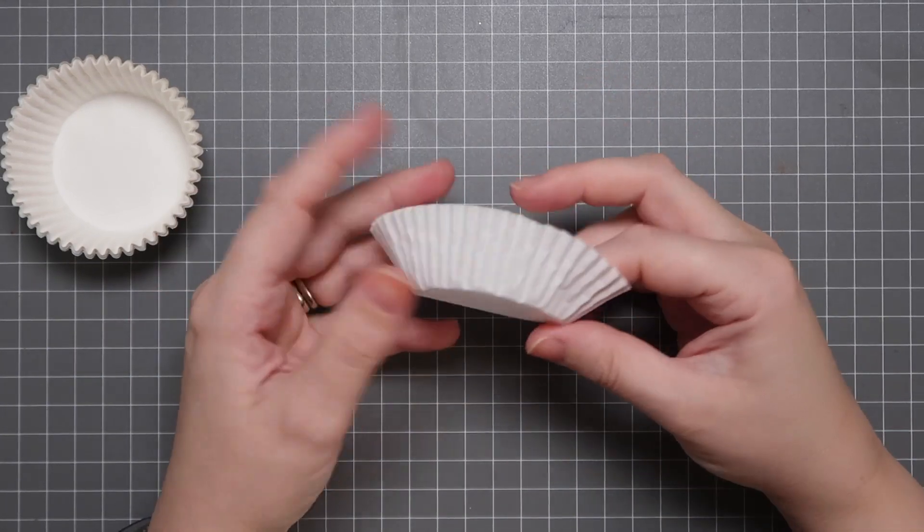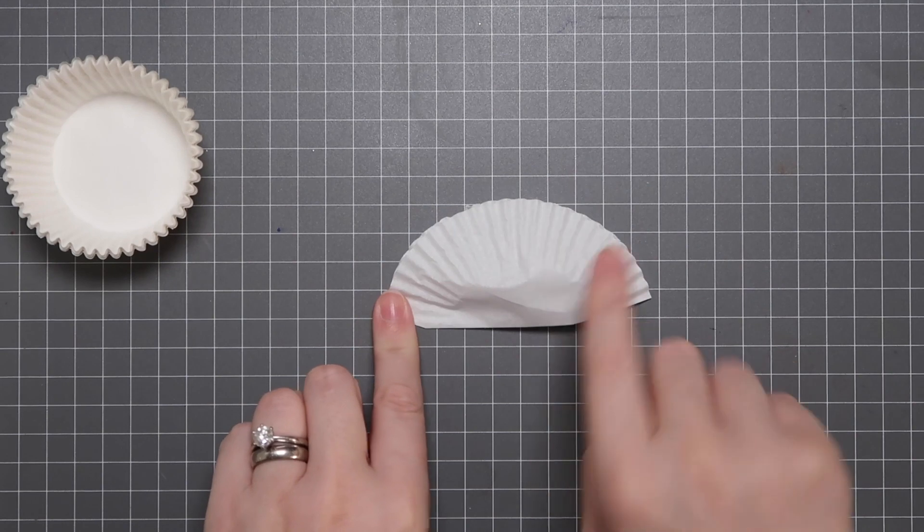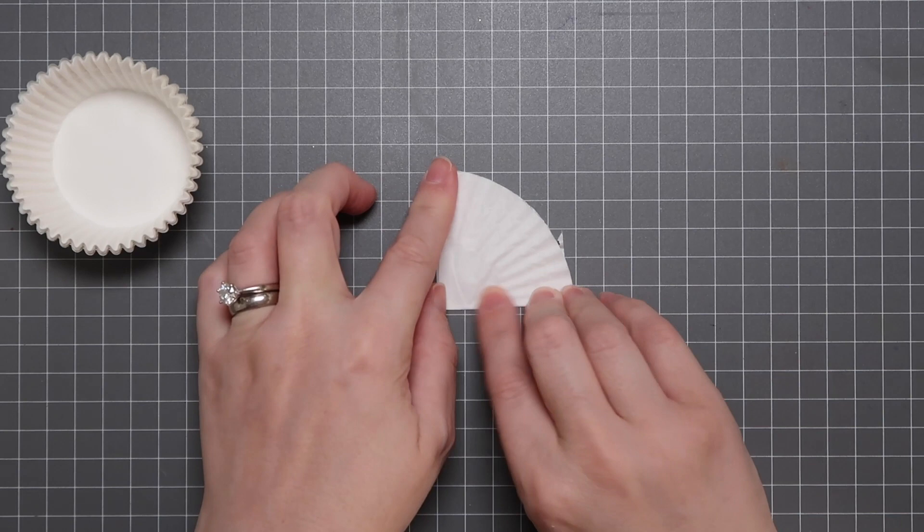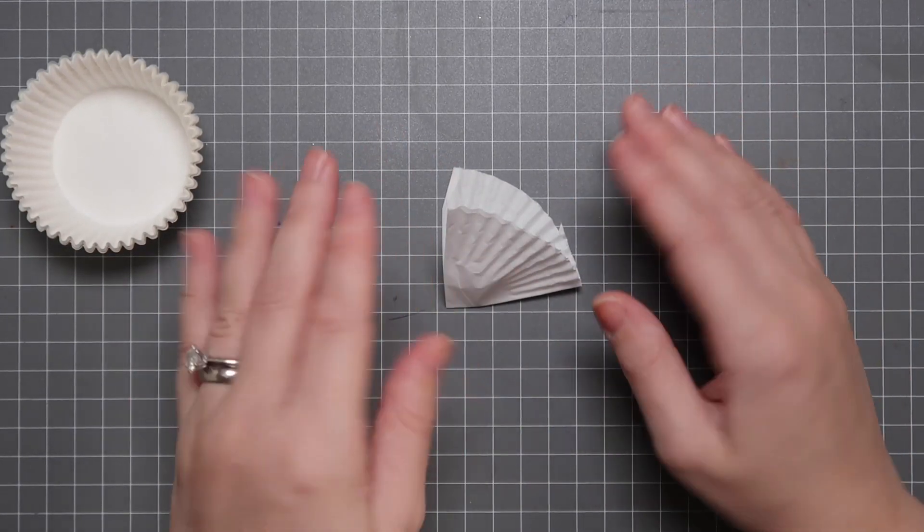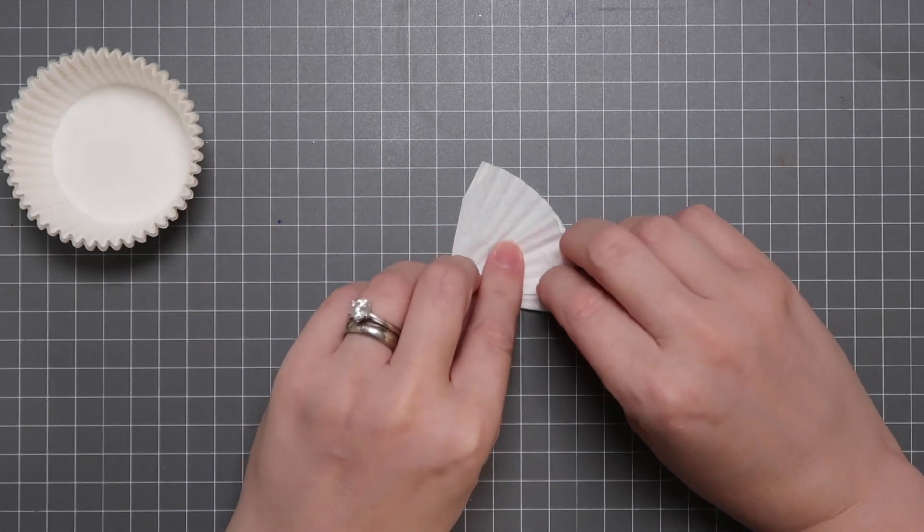Once you've separated your cupcake liner, you're going to fold it in half, so you get this half-circle look. You're going to fold that in half again. It doesn't have to be super precise, but the more precise it is the more accurate your final ball will be, the smoother it will be, but it doesn't really matter, it's fairly forgiving.